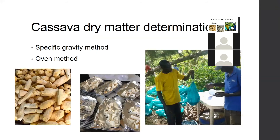The problem is cassava dry matter can be difficult to measure. There are two main ways it's normally measured: the specific gravity method and the oven method. For the specific gravity method, you take the roots still in the field, take a subset from your plot, weigh them in air and then in water, and use a simple equation to translate that into dry matter content. The oven method involves taking samples back to the lab, peeling and shredding the roots, and measuring them before and after drying.